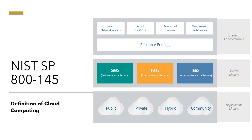The last deployment model is hybrid cloud. The cloud infrastructure is a composition of two or more clouds — for example, private, community, or public — that remain unique but are bound together by standard or proprietary technologies that enable data and application portability. An example of this is cloud bursting for load balancing.